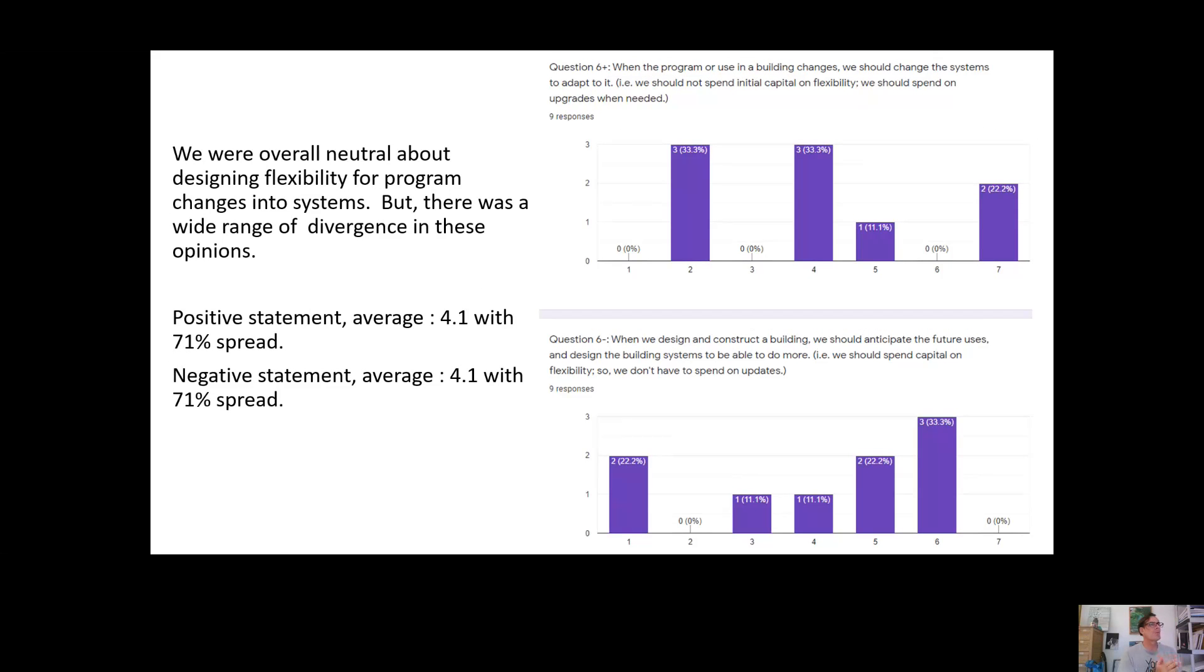This is an interesting one. When the program use in a building changes, we should change the systems to adapt to it. The negative side of this, when we design and construct a building, we should anticipate future uses and design those building systems to be able to do more upfront with capital. And the moral of the story here is disagreement and divergence. So in both of these questions, we have this central average with the spread almost all the way across the curve.